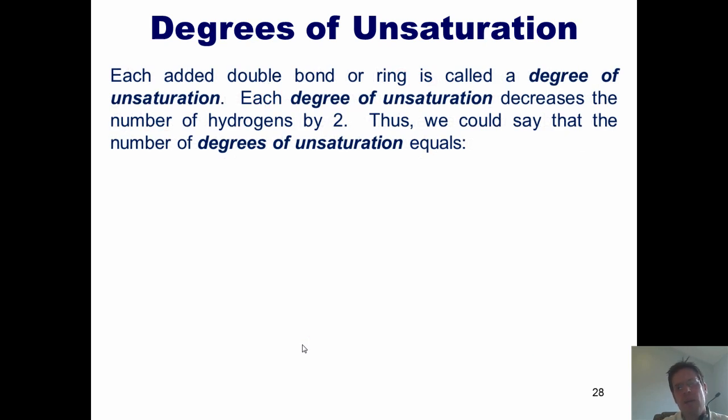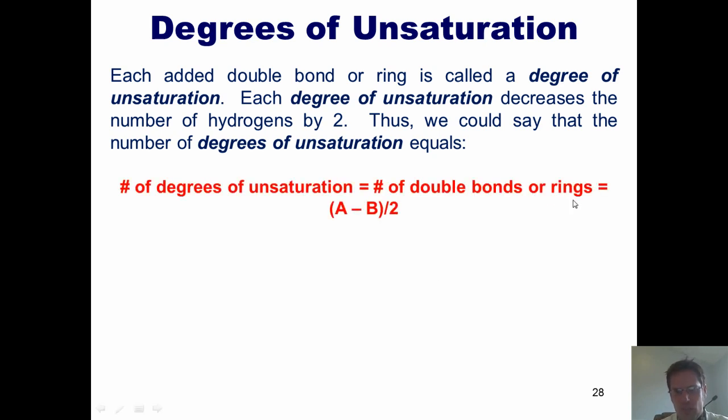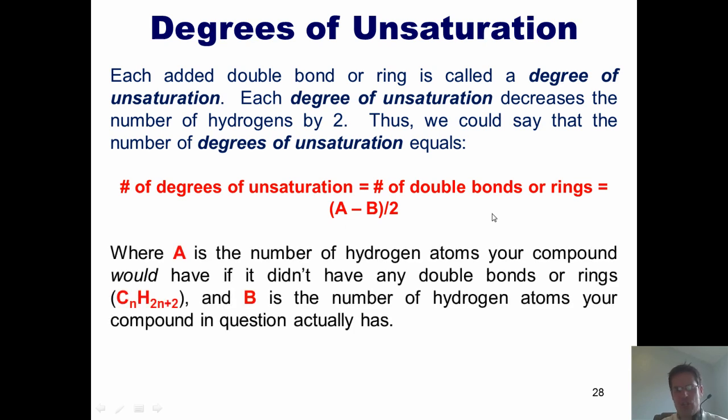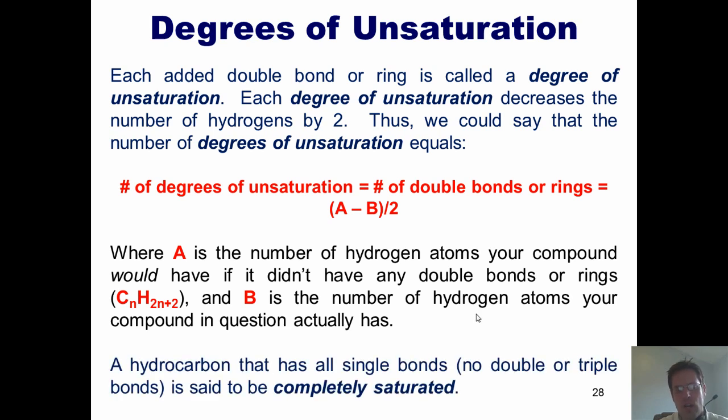Now, each added double bond or ring is called a degree of unsaturation. Each degree of unsaturation once again decreases the number of hydrogens by 2. Thus, we could say that the number of degrees of unsaturation equals the number of double bonds or rings, which is A minus B divided by 2. Where A is the number of hydrogen atoms your compound would have if it didn't have any double bonds or rings. And B is the number of hydrogen atoms your compound in question actually does have. A hydrocarbon that has all single bonds, no double or triple bonds, is said to be completely saturated.